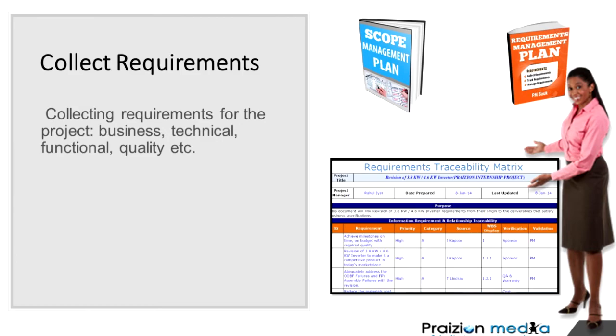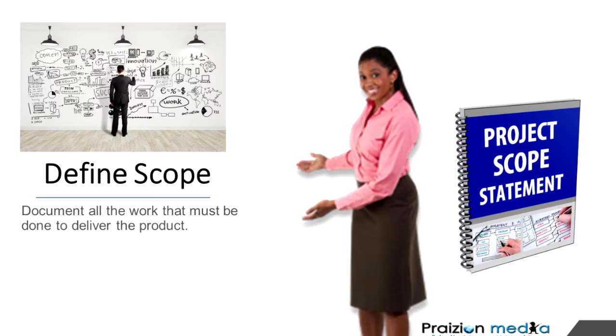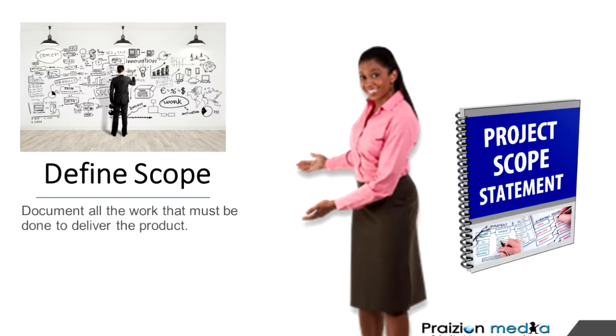Our next process is define scope. In define scope, you need to think about inclusions, exclusions, constraints, and assumptions. These are important as you're defining what needs to be done on the project as a whole. Based on one requirement, you could have a huge amount of scope added — scope does not equate to requirements; they're two different things. Requirements could lead to more scope. In define scope, we create a project scope statement as our major output.